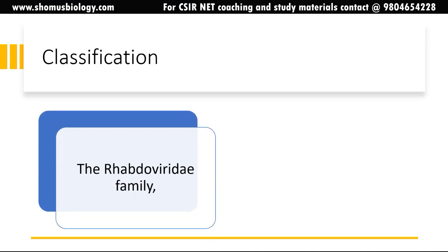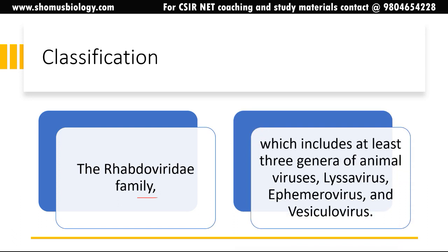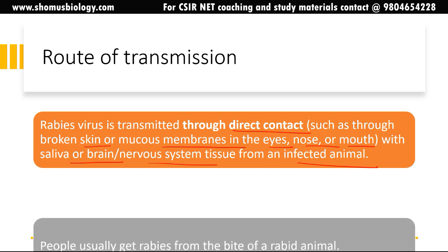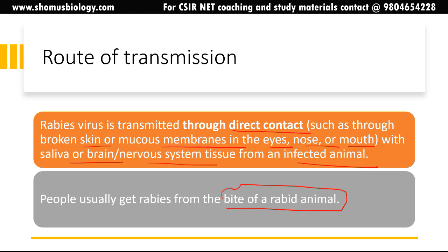Classification: rabies belongs to the Rhabdoviridae family, which includes at least three genera of animal viruses: Lyssavirus, Ephemerovirus, and Vesiculovirus. Rabies lyssavirus is the one we are discussing. The route of transmission is through direct contact — such as through broken skin or mucous membranes in the eyes, nose, or mouth — with saliva or brain and nervous system tissue from an infected animal. People usually get rabies from the bite of a rabid animal, particularly stray dogs.